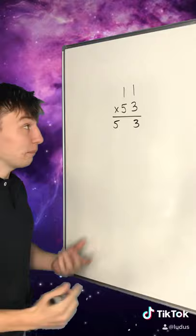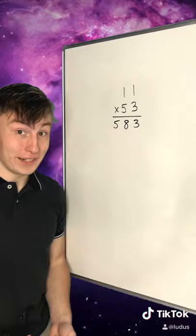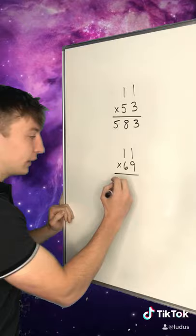The only time this trick gets a little more complicated is when doing something like 11 times 69. Now you separate the 6 and the 9, and 6 and 9 added together are 15, and you can't put a 15 here.